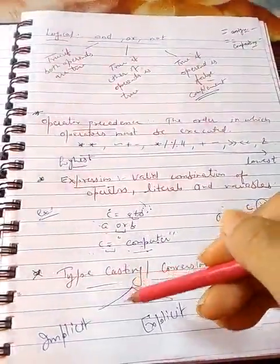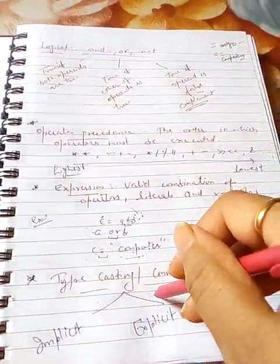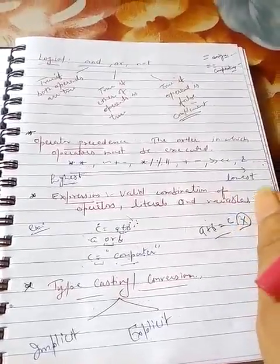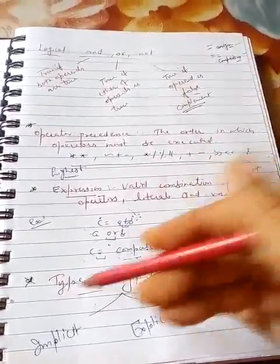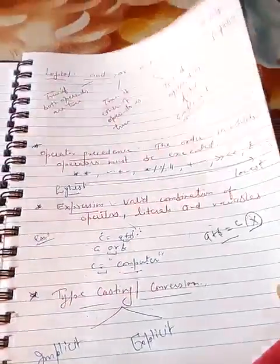This can be done in two ways: explicitly or implicitly. Implicitly, Python can do this task automatically. Explicitly, the user has to do this work. Let's see how.